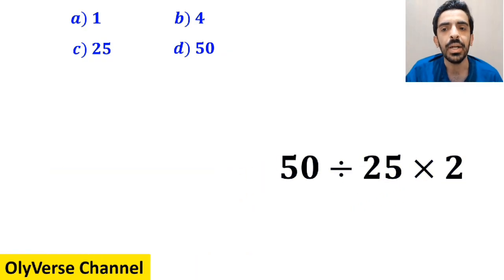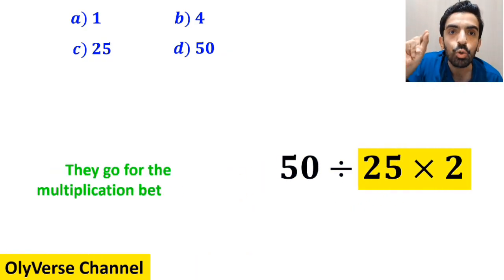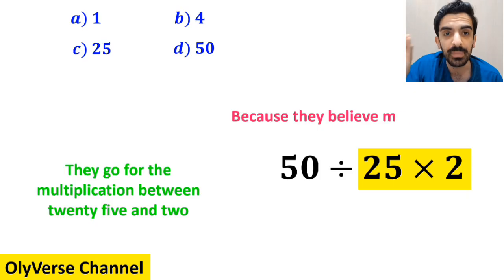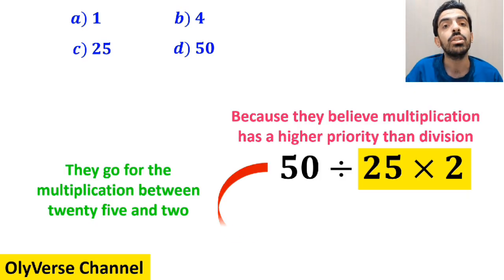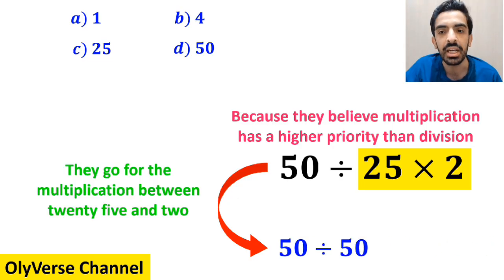In the next step they go for the multiplication between 25 and 2 because they believe multiplication has a higher priority than division. So they simplify this expression and write it as 50 divided by 50 which finally gives them the answer 1.